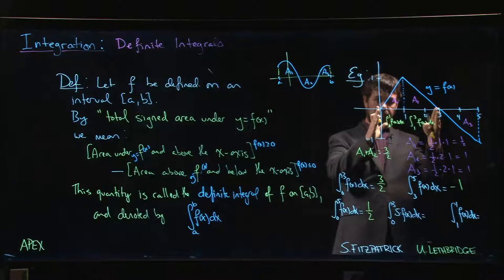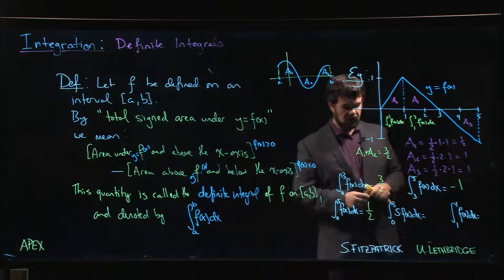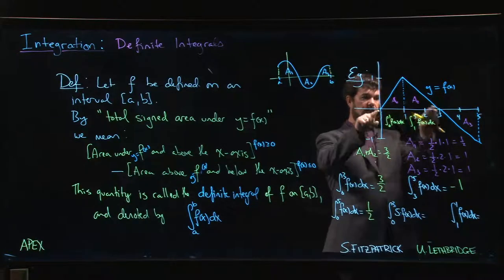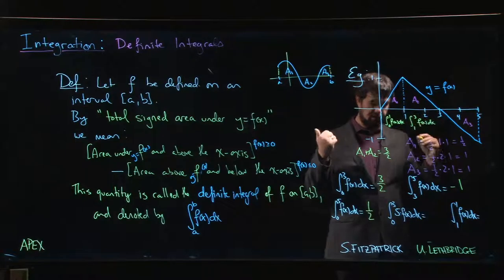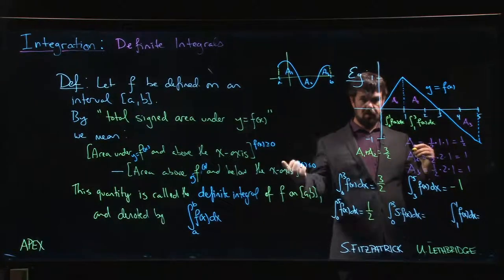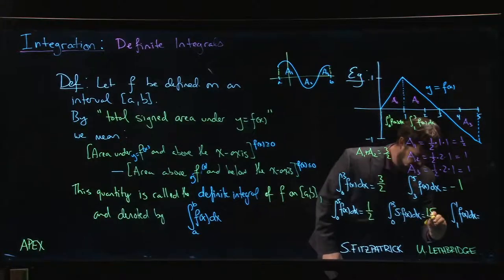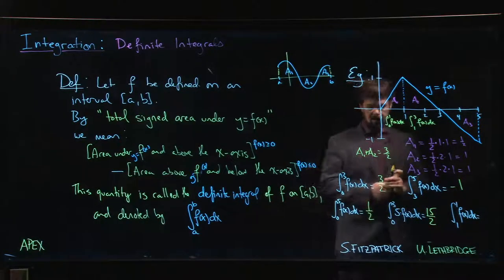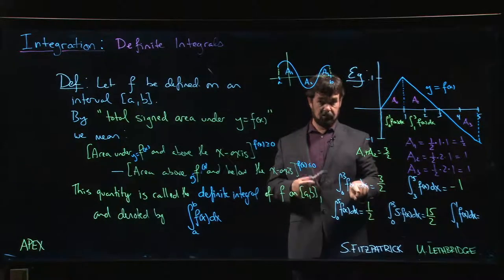So then we haven't changed the width of the triangle at all. The base is still the same, but now the height is 5 times as big. So then we'd be doing one half times a base of 3 times a height of 5. So we get 15 over 2. One half times 3 times 5 gives us 15 over 2.